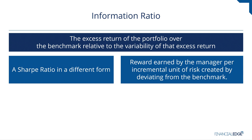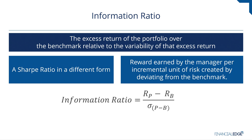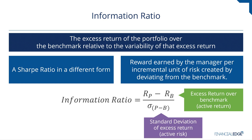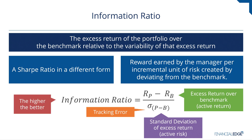Let's look at the formula. The information ratio is the excess returns over the benchmark — the return of the portfolio minus the return on the benchmark, also called the active return — divided by the standard deviation of those excess returns, also known as active risk or tracking error.